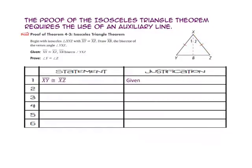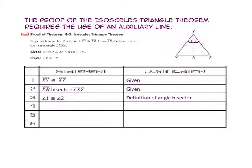Next, we will use the given fact that segment XB is the bisector of angle YXZ. By the definition of angle bisector, we know that angle 1 is congruent to angle 2. By the reflexive property of congruence, side XB is congruent to side XB. We now have three congruent corresponding parts of triangle YXB congruent to three corresponding parts of triangle ZXB.